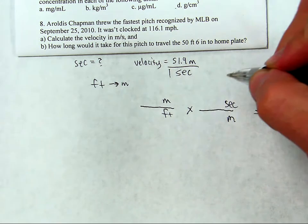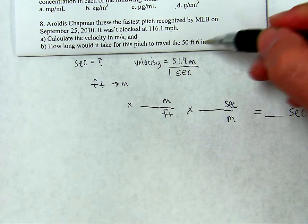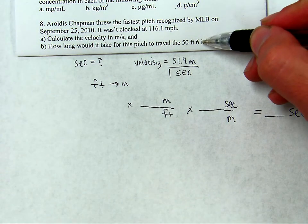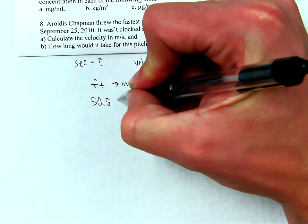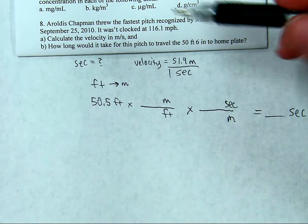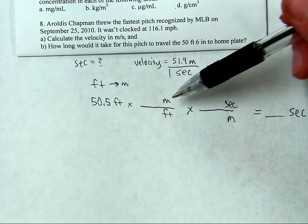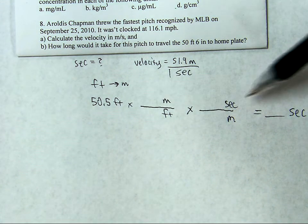So, I think now what I can do is I can take the original number of feet. 6 inches is half a foot, so it's 50 and a half feet. I can take my original 50.5 feet. And with my conversion factors, feet cancels feet, meters cancels meters, and seconds to be my final unit.